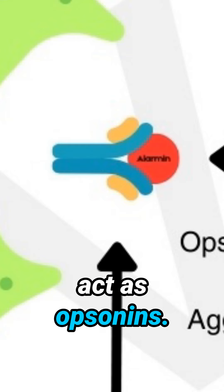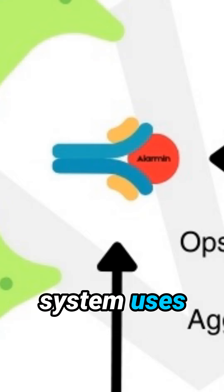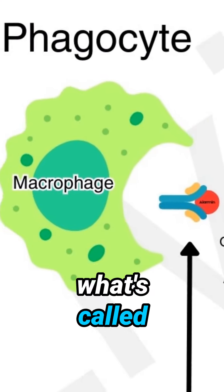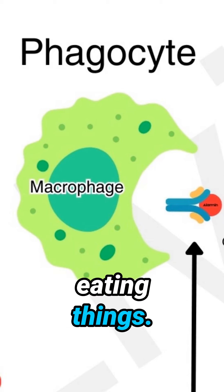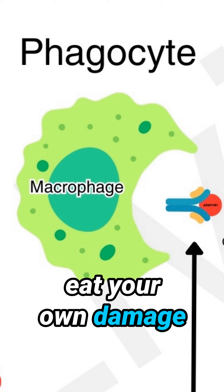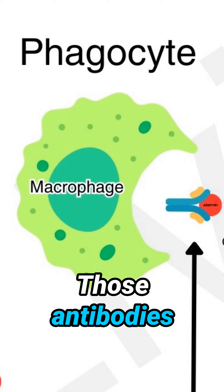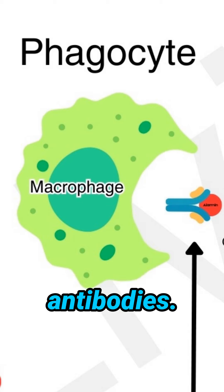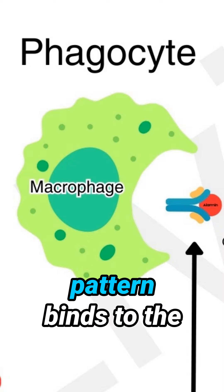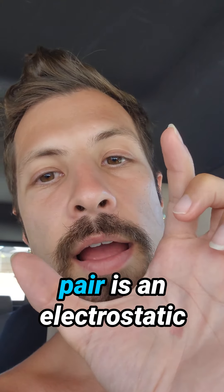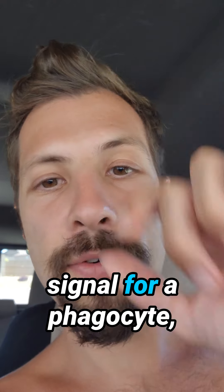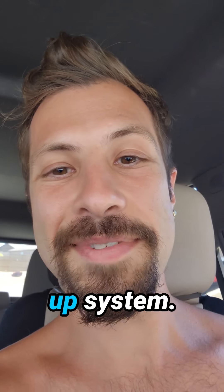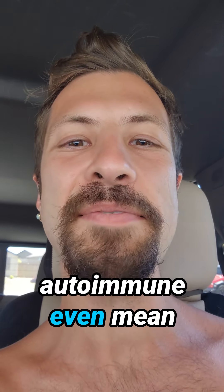Antibodies act as opsonins — things the immune system uses to stick to what it needs to eat. Your innate immune system cleans up things through phagocytosis, which is eating things. They can eat microbes or they could eat your own damaged cells. Those antibodies act as opsonins: to clean up DAMPs, your body releases antibodies, the DAMP binds to the antibody, and that acts as an electrostatic signal for a phagocyte — like a macrophage — to eat it up. Antibodies are just your cleanup system. You don't have autoimmunity. What the hell does autoimmunity even mean now?